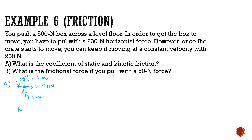We know force of friction static equals mu times normal force. So the maximum threshold of static friction is 230 newtons, and the coefficient of static friction mu times the normal force of 500 gives us mu static equals 230 divided by 500, which is 0.46.